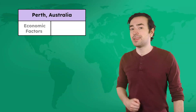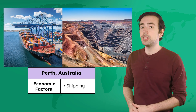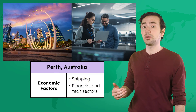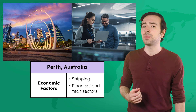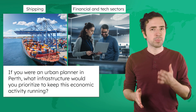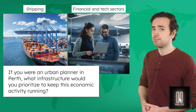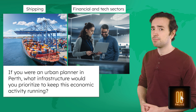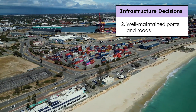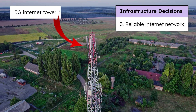A city's dominant economic activities will also influence what infrastructure urban planners prioritize. Perth's coastal location makes it a global shipping hub for Australia's mining industry. Perth's quaternary sector is also developing, with international businesses contributing to strong financial and tech sectors. As a trading hub, Perth's port and its surrounding roads need to be well maintained. Plus, a growing quaternary sector needs a fast, reliable internet network.